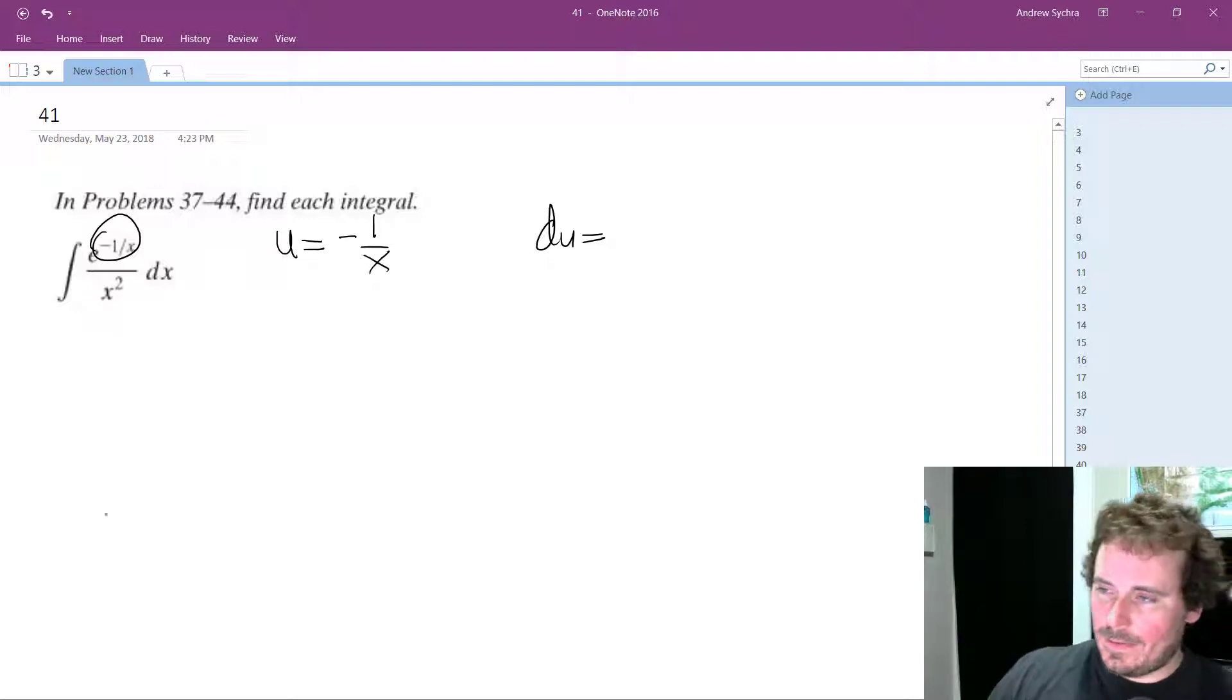What's the derivative of negative 1 over x raised to negative 1? So the derivative of that is negative 1 times x raised to negative 1 minus 1, and then we pull that down to negative 2. So simplify that down.